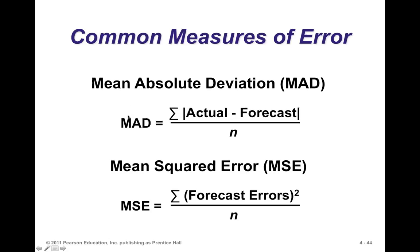We could calculate what we call a mean absolute error or mean absolute deviation, where we take the actual minus the forecast. We don't care if there's a negative difference or positive difference — if we're under-forecasted or over-forecasted, we simply know the magnitude of the error, hence the absolute value. The danger with just adding up the errors is that the negative ones cancel out the positive ones, and you might be mistaken about how good your forecasting model is.